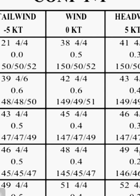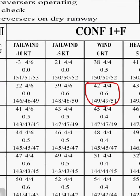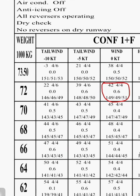Let me consider this box here. The value 42 is the box temperature — it's the maximum temperature permissible at that weight. The values '4 by 4' are limitation codes found at the bottom of the chart. The value 0.6 is called delta weight — this box is actually calculated for 72.6 tons, not 72 tons alone. For example, this one here is for 70.4 tons. The V-speeds shown are 149, 149, 151 — those are V1, VR, and V2.